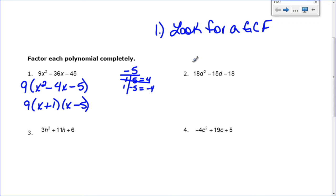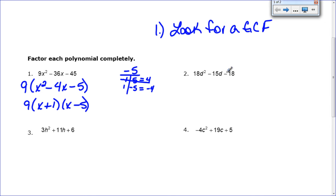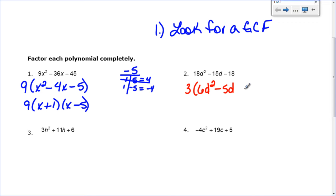For number 2, let's look for a greatest common factor. I've got 18, 15, and 18. There is a GCF because 3 will go into all of those numbers. So I'm going to factor out a 3. 18 divided by 3 becomes 6d squared, 15 divided by 3 becomes 5d, and 18 divided by 3 becomes 6 again. Now I have to see if I can factor what's remaining.